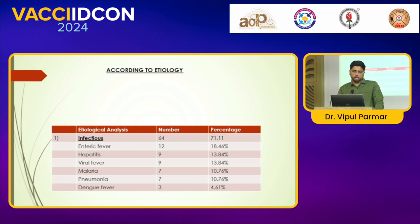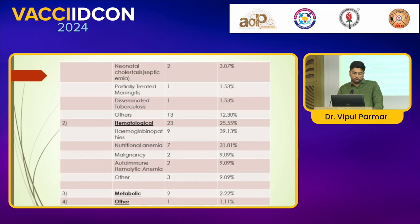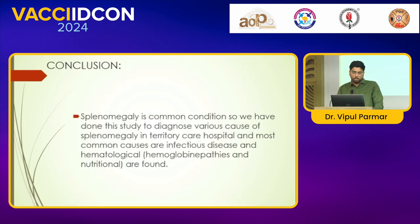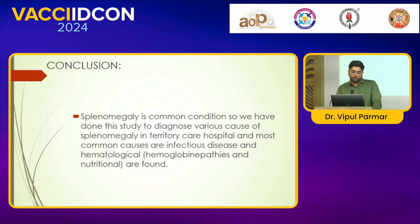According to etiology, most common causes are enteric fever, then hepatitis, viral fever, malaria, pneumonia, dengue, hematological hemoglobinopathies, nutritional anemia, malignancy, and hemolytic anemia. Splenomegaly is a common condition, so we have done this study to diagnose various causes. In this tertiary care hospital, most common causes are infectious diseases, hematological hemoglobinopathies, and nutritional anemia.